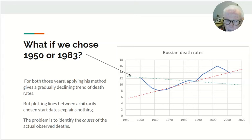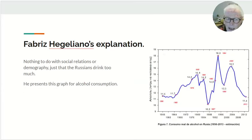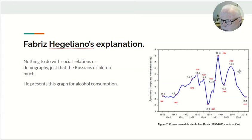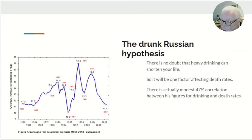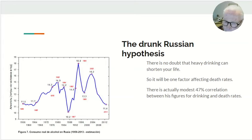The real problem is to identify the causes of actually observed deaths. Why did these deaths occur — were the causes demographic or social? The explanation Fabrizio Hegeliano gives is that it had nothing to do with social relations or demography; it's just that the Russians drink too much. He presents a graph of alcohol consumption as the cause. If you correlate his figures with the actually observed death rates over the period, there is a 47% correlation — a positive correlation, but not a very strong one.